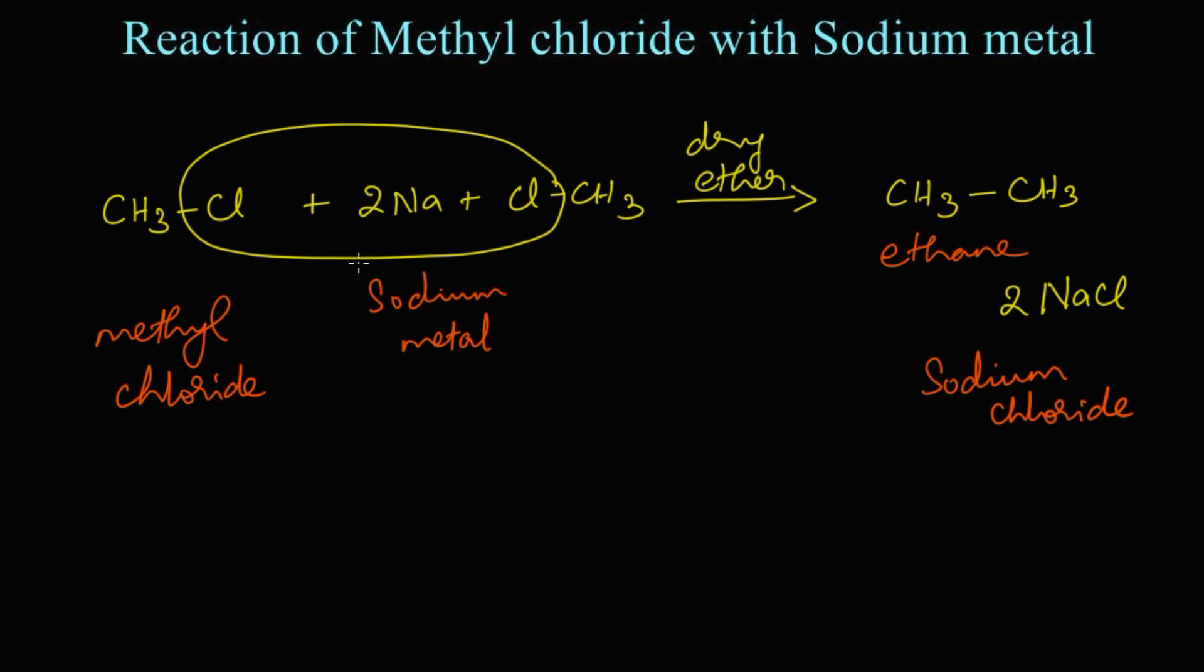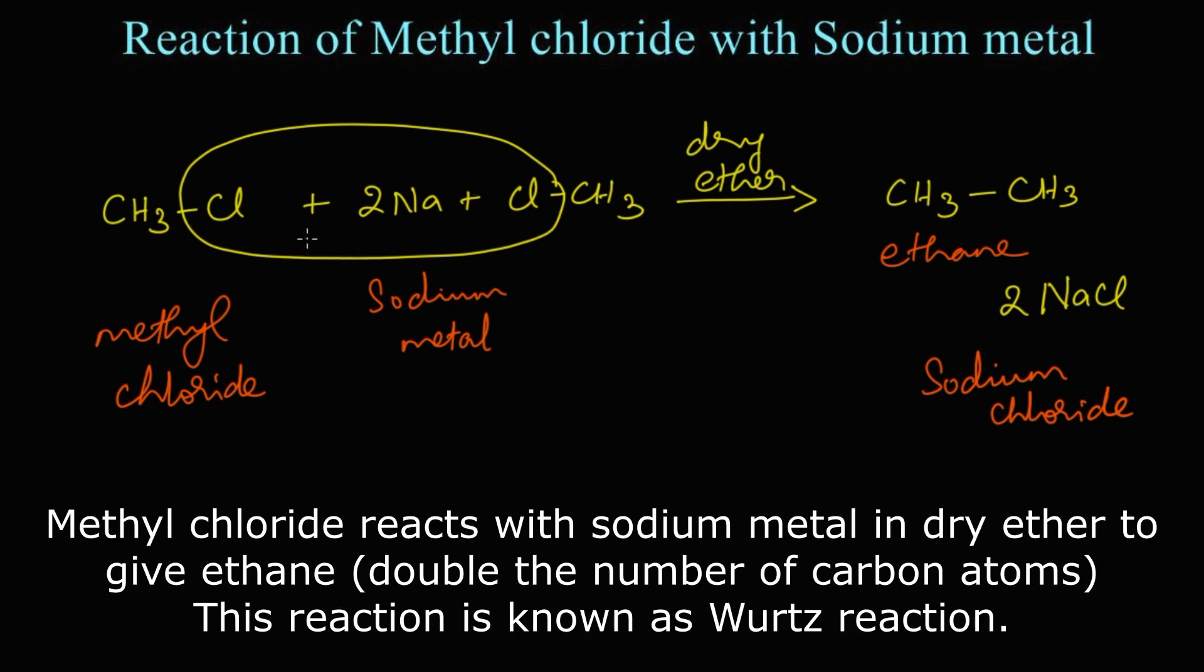Come on, let's summarize the reaction. When two molecules of methyl chloride react with sodium metal, the methyl chloride will lose their halogen, that is chlorine, as sodium chloride. As I explained, the remaining thing, this methyl and this methyl, will get attached together and form ethane as the product. This reaction is known as Wurtz reaction.